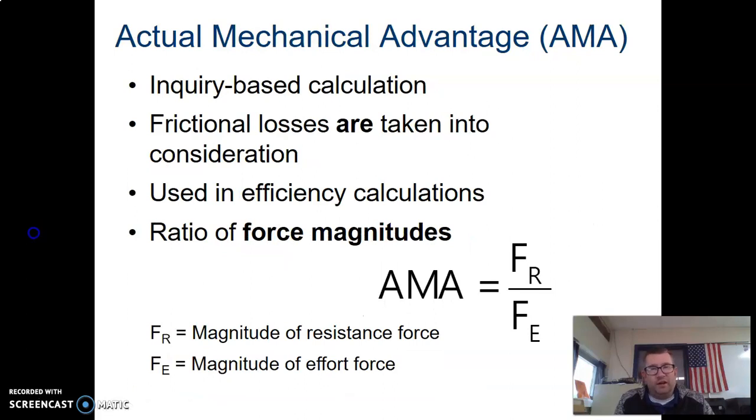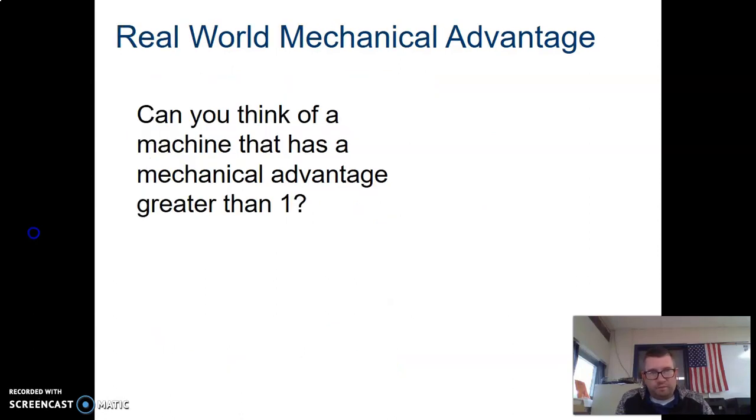AMA frictions are taken into account, and that only has to do with forces. If IMA has to do with distances, AMA has to do with forces. So AMA free, AMA equals FR, which is the resistance force, divided by FE, which is the effort force.